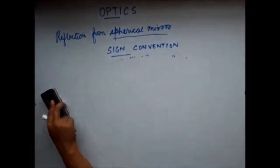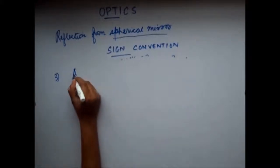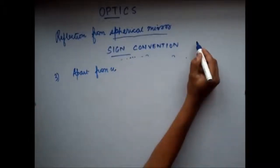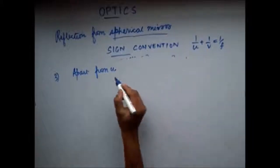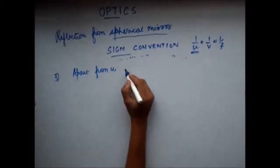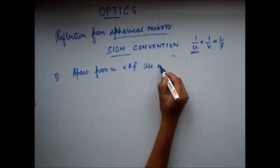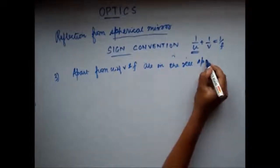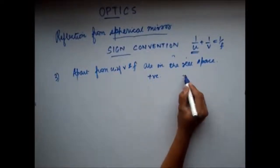The third point of the sign convention: apart from u — the object distance — if other quantities like v and f are in the real space, then they are considered positive. If they are in the virtual space, they are considered negative. The mirror formula is 1/u + 1/v = 1/f.